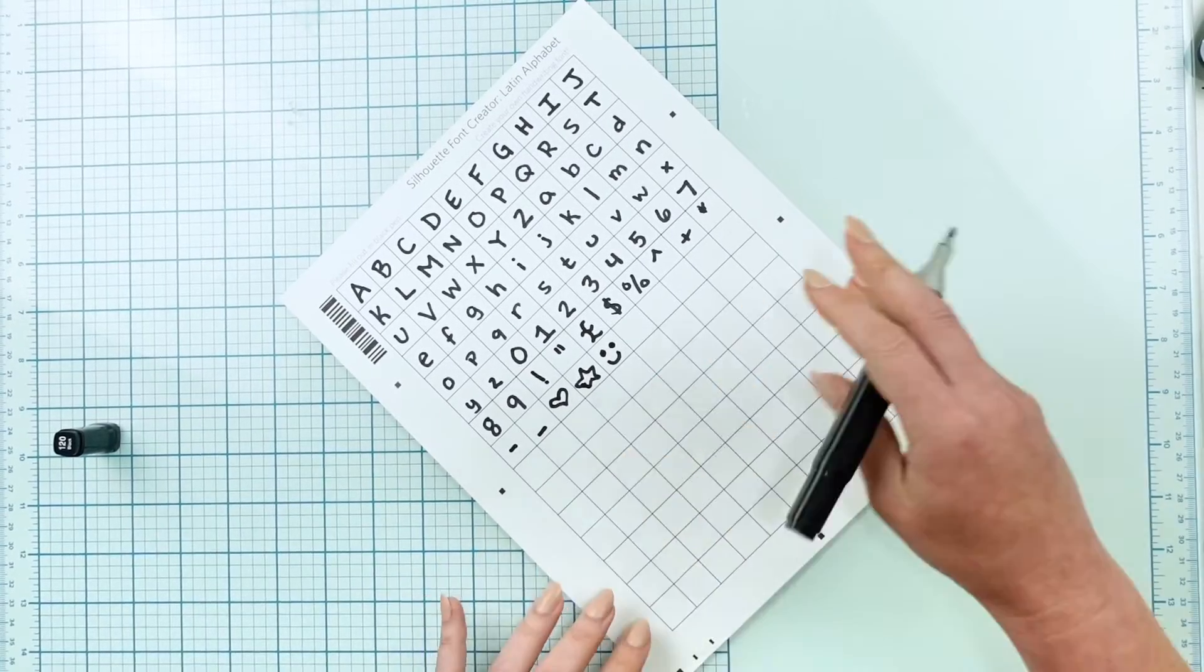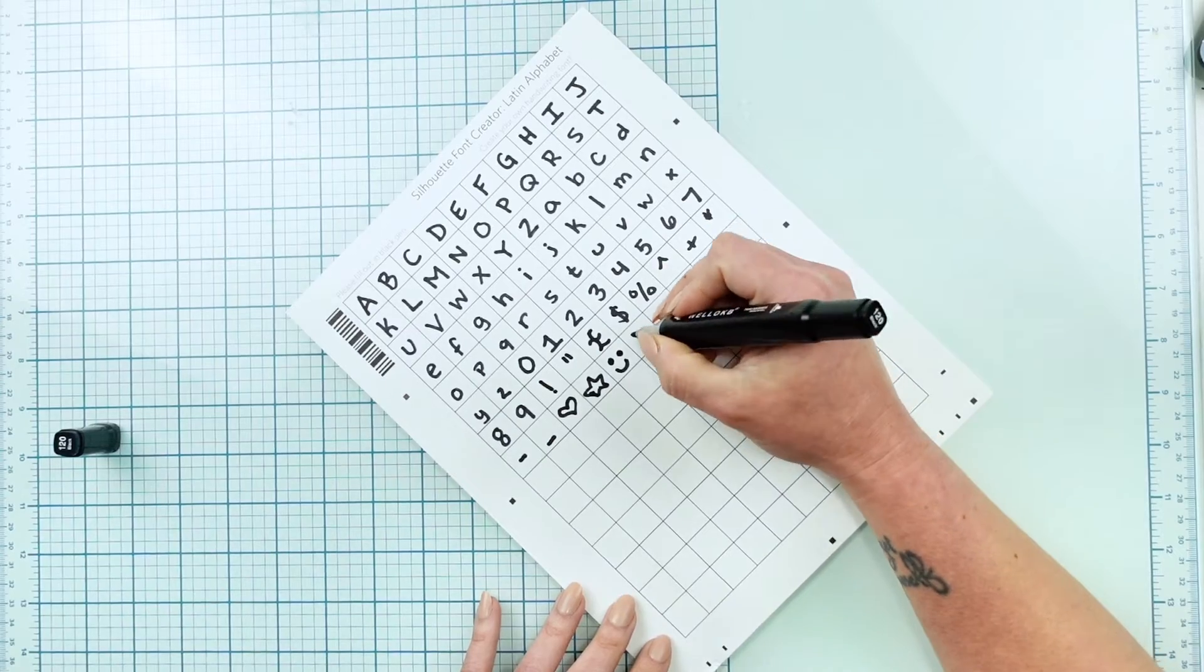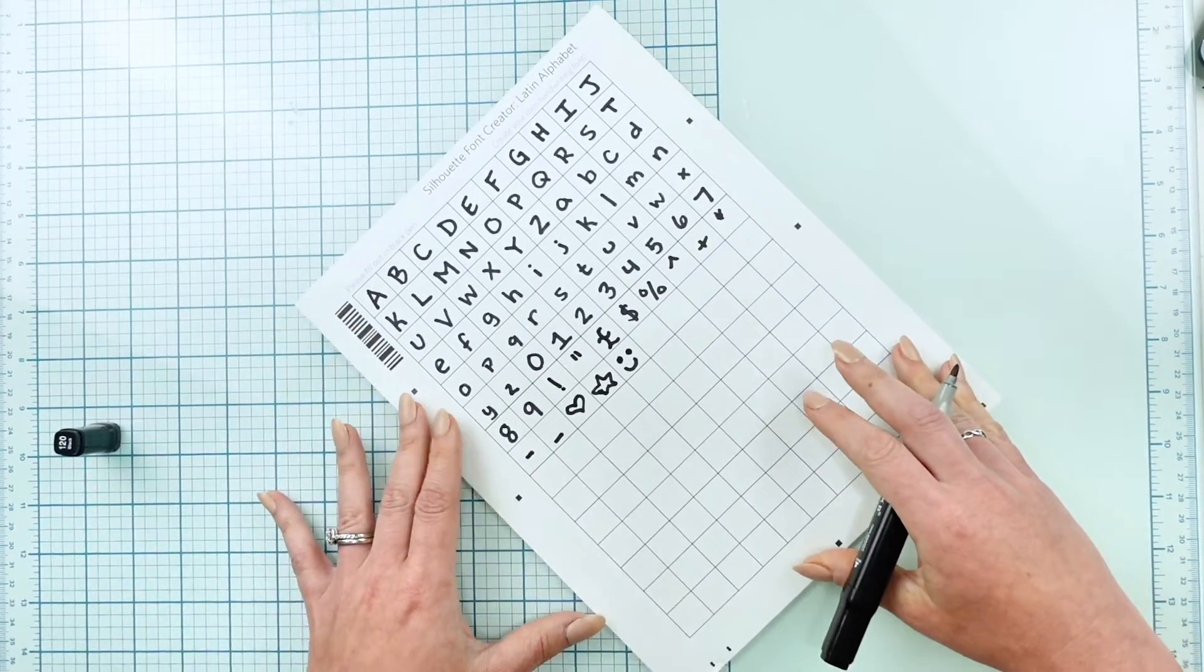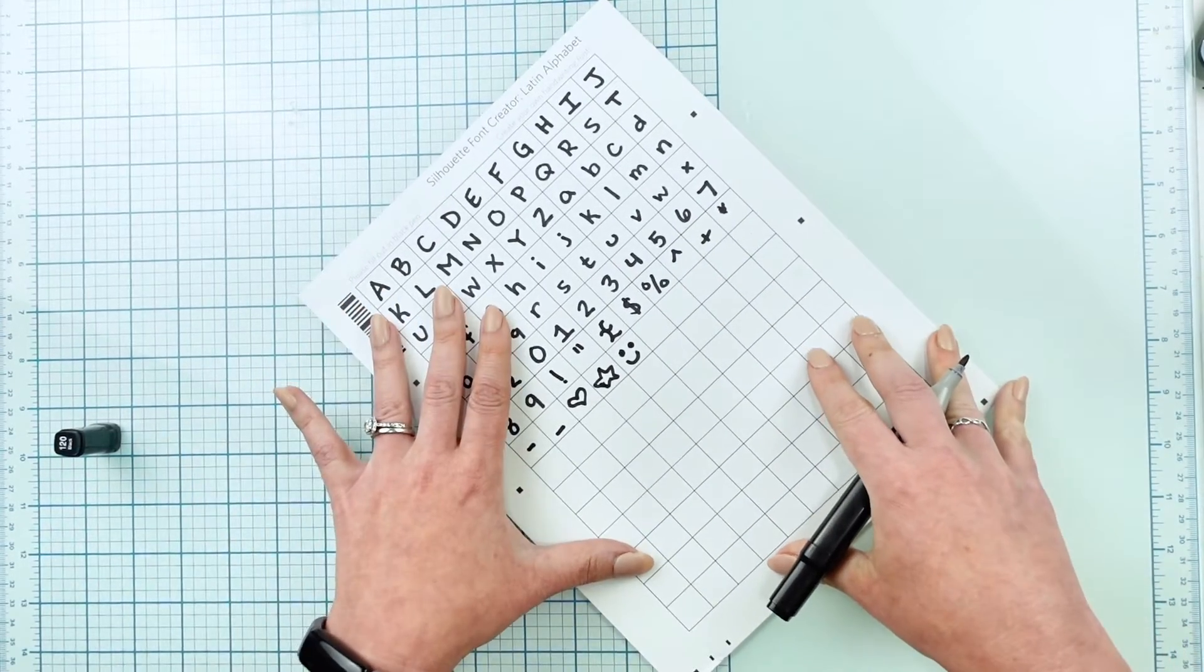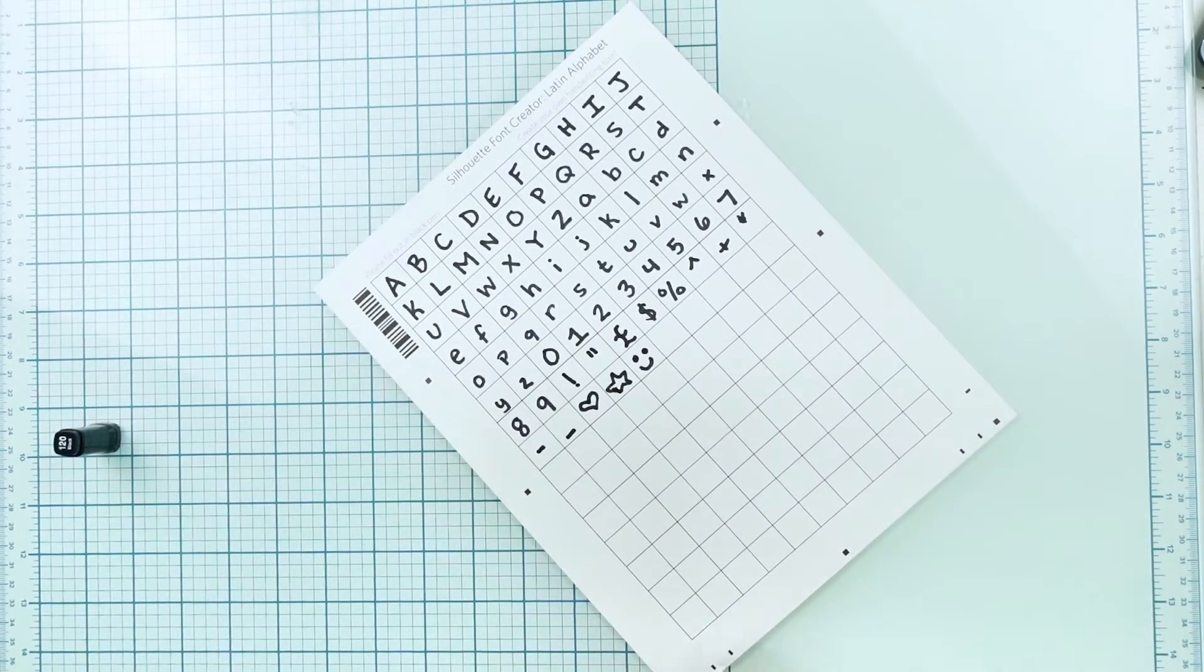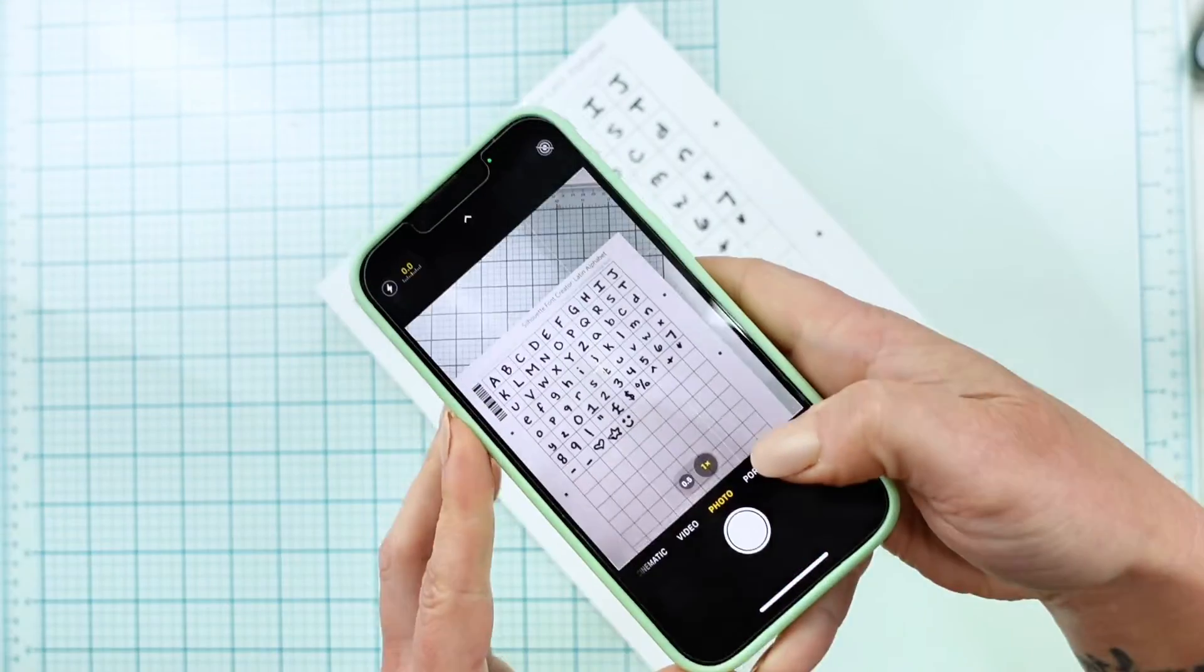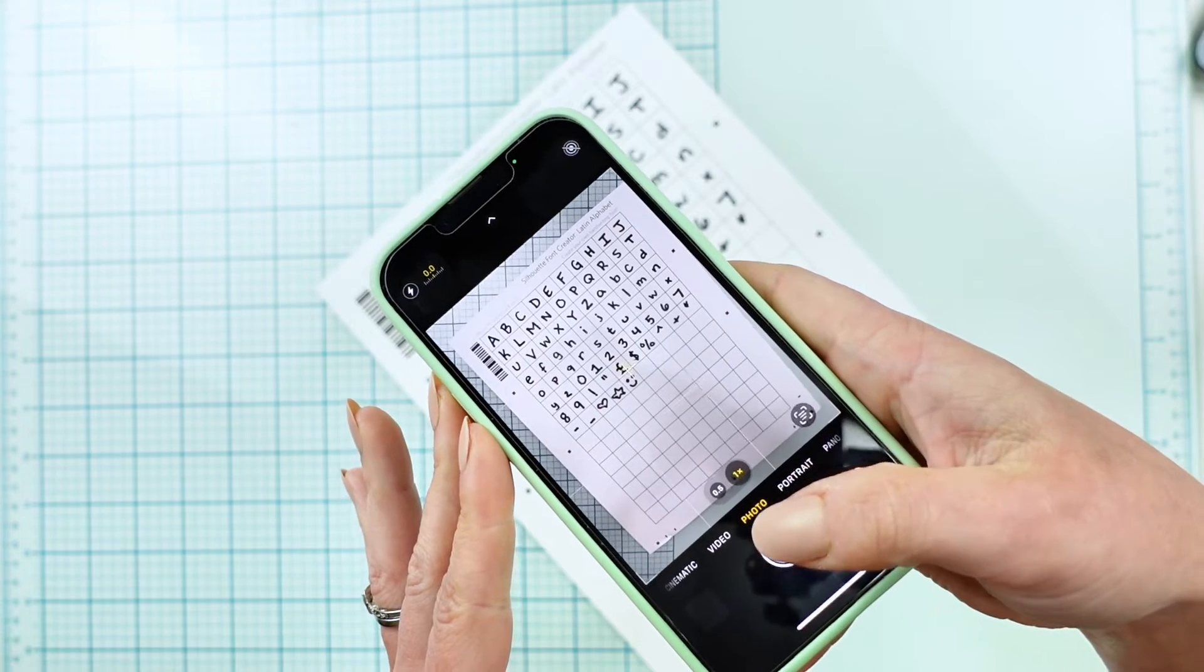And so once you have your sheet done you can leave it like this and you can leave half of it blank you can fill in the whole sheet whatever you want to do basically the characters that you don't fill in it ends up just being like an underscore blank line so what you can do from here is either finish filling it out or you can leave it as it is and you can either put it into your scanner which is how I'm going to do it I'm actually going to show you both ways or you can take a picture of it try to get the whole sheet.